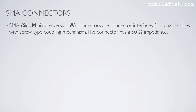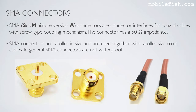SMA connectors — SMA stands for Sub-miniature version A — are connector interfaces for coaxial cables with a screw-type coupling mechanism. The connector has a 50 ohm impedance. SMA connectors are smaller in size and are used together with smaller size coax cables. In general, SMA connectors are not waterproof.